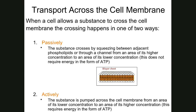The other way substances can move across the cell membrane is what's known as actively. When a substance is moving actively across the cell membrane, it is being pumped, requiring energy from the cell to power pumps. The reason it has to be pumped is because the substance is moving from an area of lower concentration to an area of higher concentration. Active transport requires energy in the form of ATP to power those pumps.